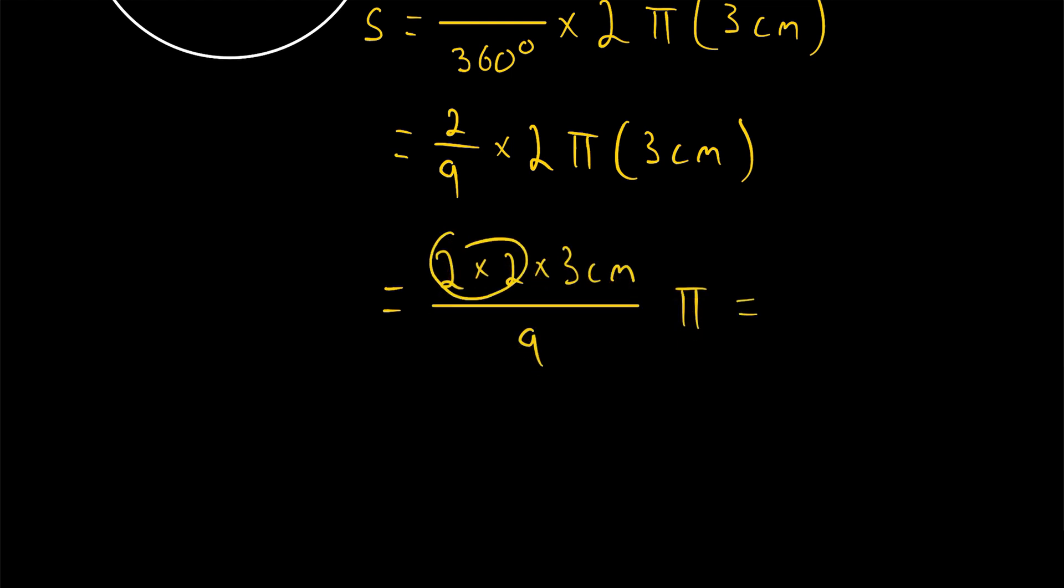Then, finally, 2 times 2 is equal to 4, and then that's getting multiplied by 3 centimeters, and divided by 9. 9 is equal to 3 times 3, so we can cancel out a factor of 3.